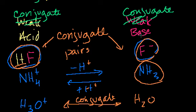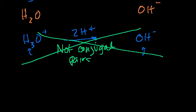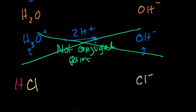Even though something might be called a conjugate acid or conjugate base, it doesn't necessarily mean it's very basic or very acidic. If I have hydrogen chloride — a strong acid — its conjugate base is the chlorine negative ion; we just get rid of one hydrogen proton, the electrons stay, giving it a negative charge. If I give you a chlorine negative ion and ask for its conjugate acid, it's hydrochloric acid. If I give you HCl and ask for its conjugate base, you get rid of a hydrogen proton and you're left with Cl minus.